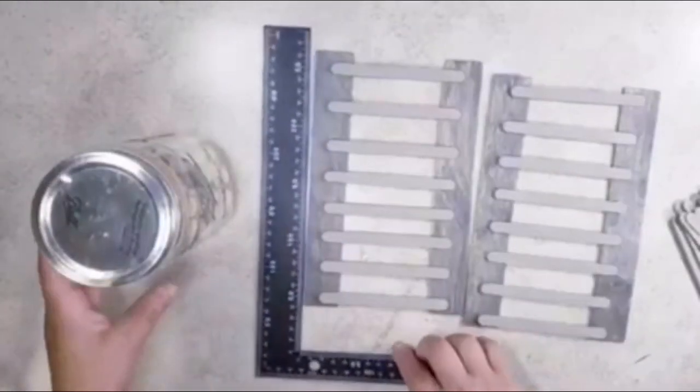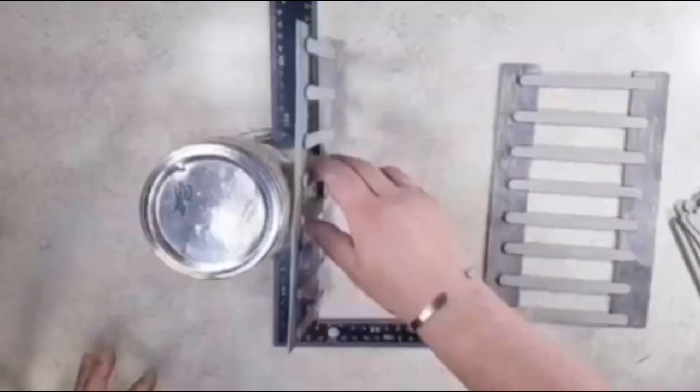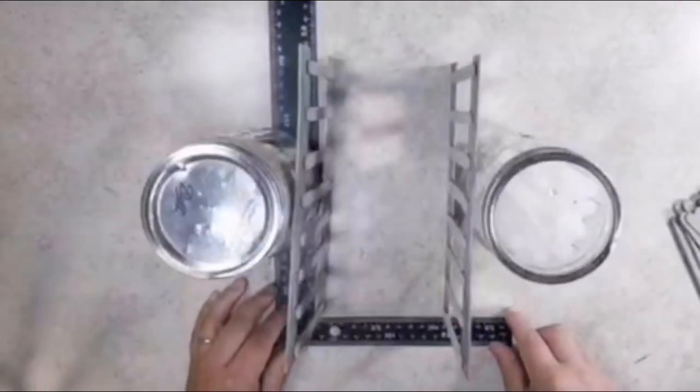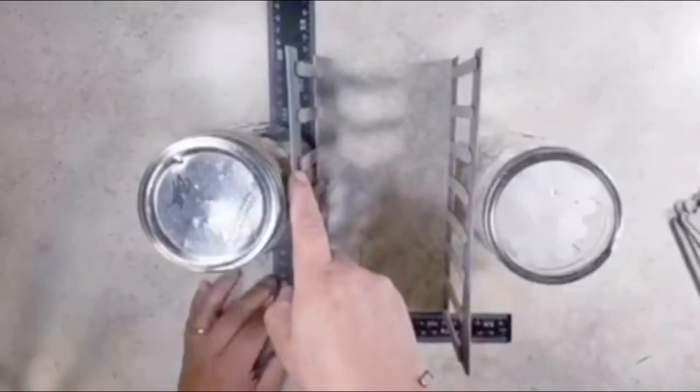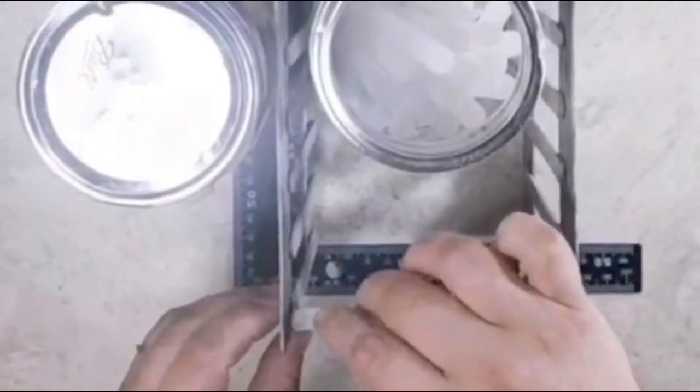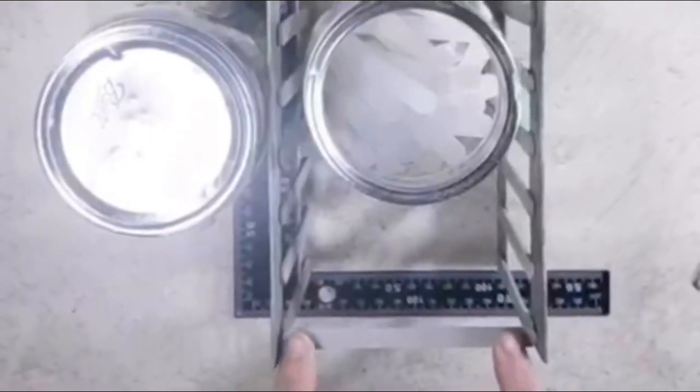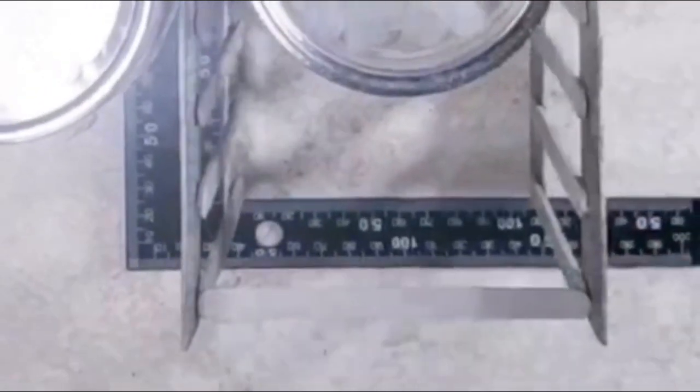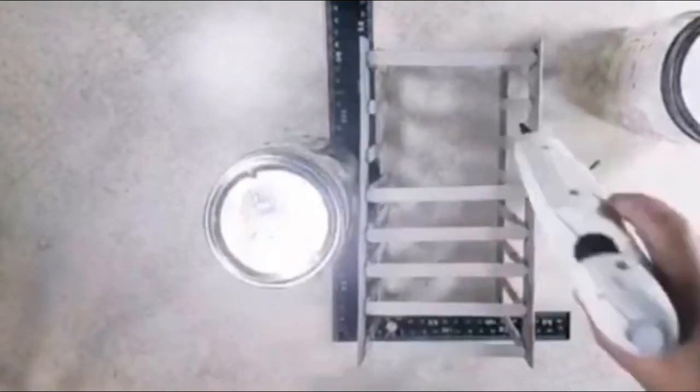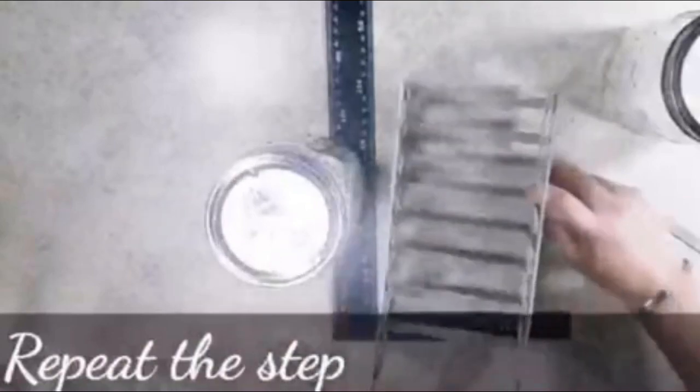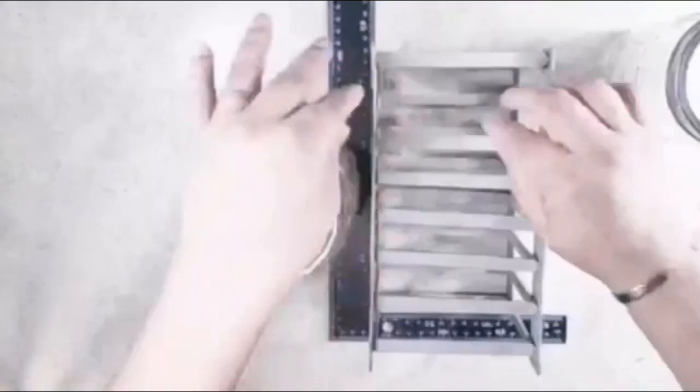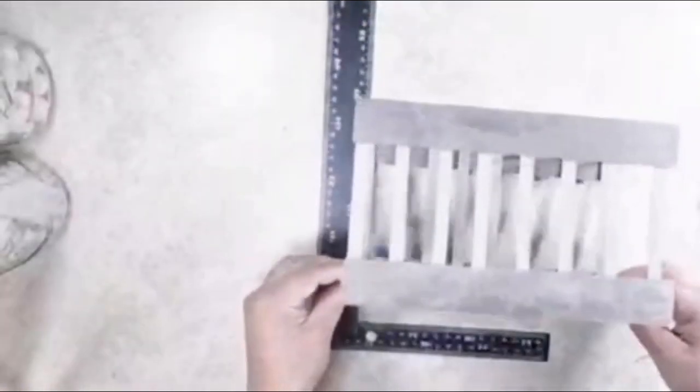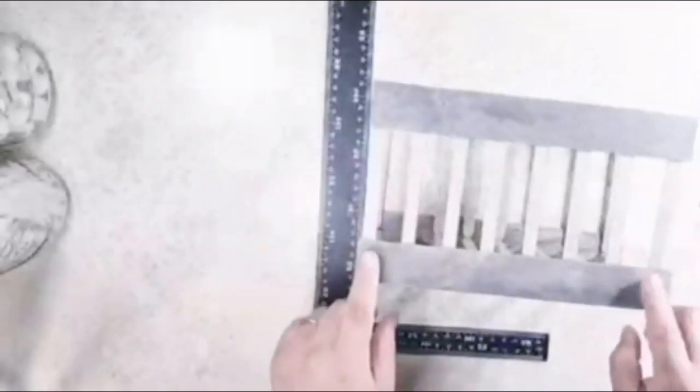Now I'm going to use this can to help me stand these sides, or actually two cans. I'm going to put both of the sides side by side using these cans to help them stand up. Then I'm going to add eight more popsicle sticks using the hot glue. I'm going to repeat the same process on the other side.